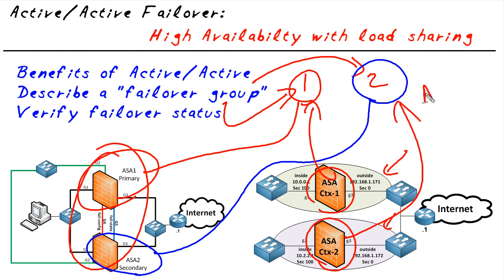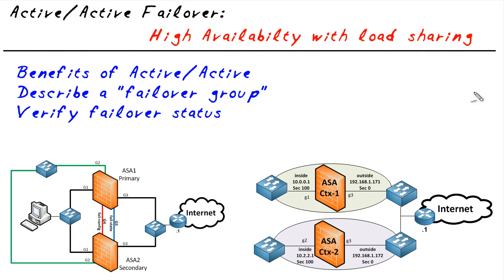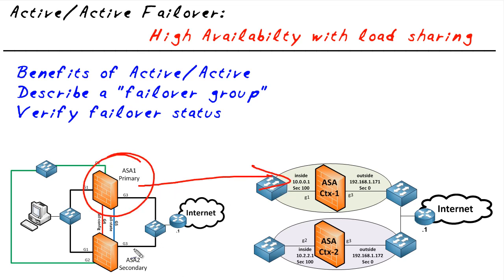Somebody taught me once: if A equals B and B equals C, then A equals C. In short, what this basically means is that we can configure the primary ASA to be active for context one, and we can configure the secondary to be active for context two, and they can then back each other up. That's why they call it active/active — it's a beautiful thing. The question is: how do we actually verify who's active for what, and how can we change it if we want to?